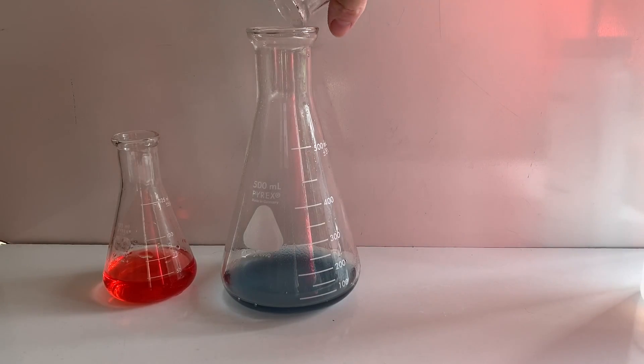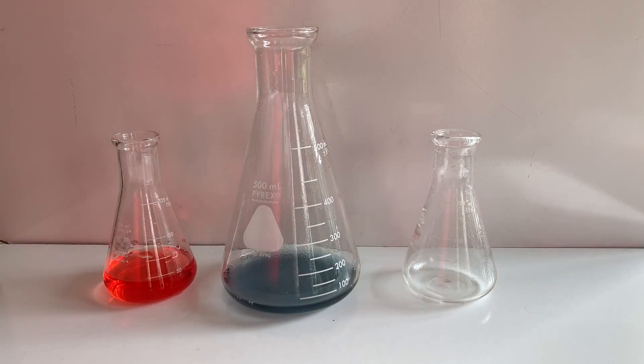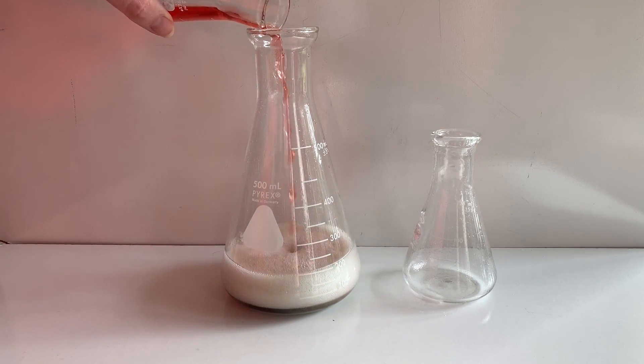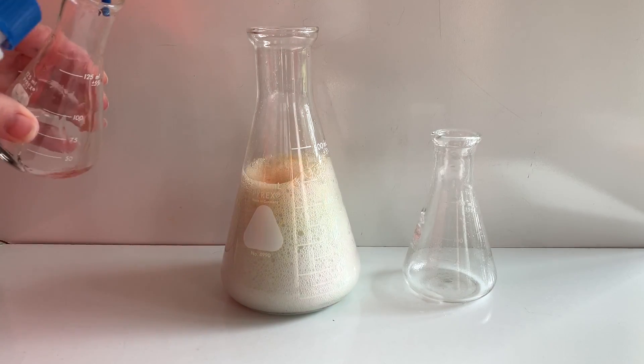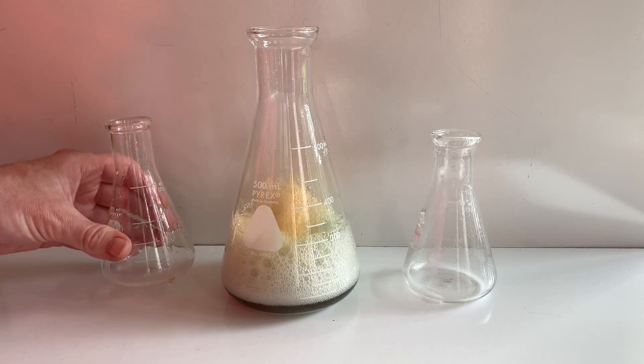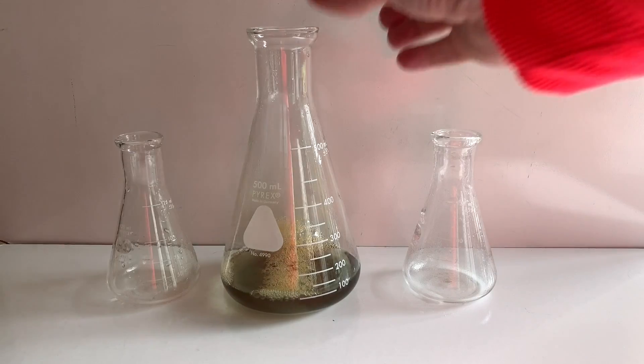There will be a limiting reactant and an excess reactant in this reaction that we'll have to calculate using stoichiometry. I will write the balanced equation which will prove that the gas that's being produced is carbon dioxide. Take note of the color of the universal indicator when this reaction is over. It'll give you an indication of which reactant was limiting and which one was excess.